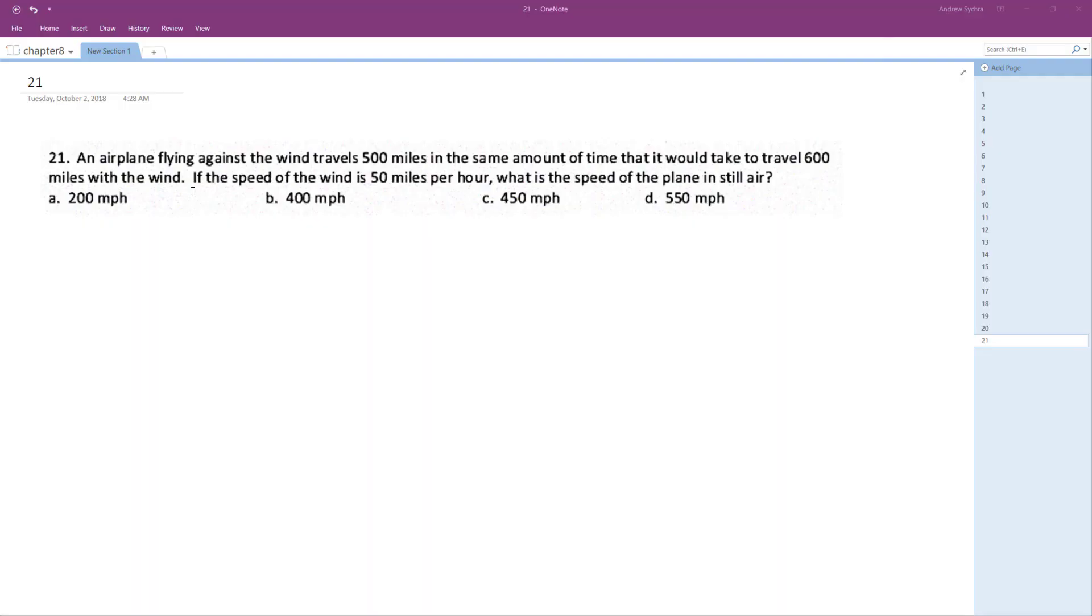So we want to solve the following problem: an airplane flying against the wind travels 500 miles in the same amount of time it would take to travel 600 miles if it was flying with the wind. If the speed of the wind is 50 miles per hour, what's the speed of the plane?